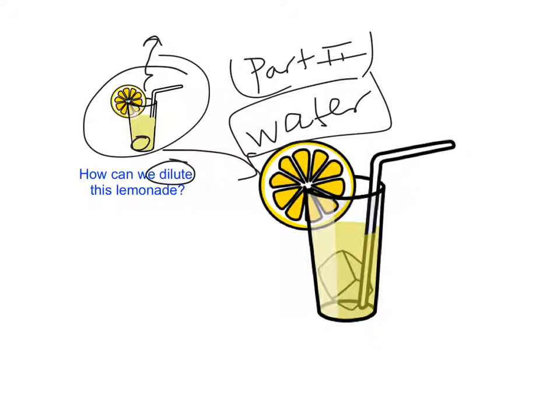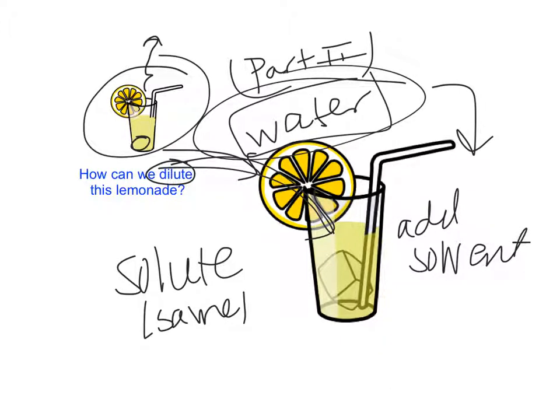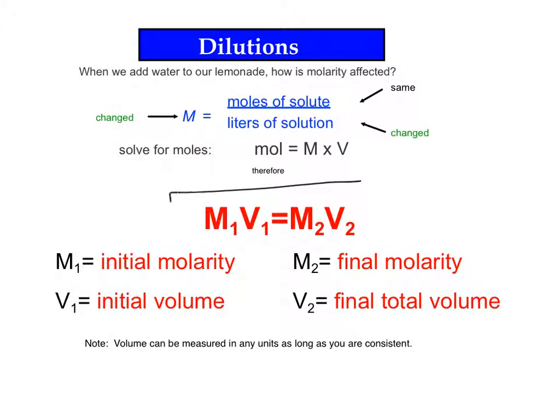It's typically easier just to add more water. Something to note is that we are adding more solvent, but the solute, the powder, what's being dissolved, remains the same. So dilutions are all about adding water to bring down the molarity, to bring down the concentration.